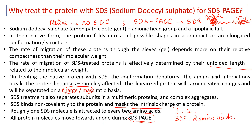Why will the proteins move to the anode? The anode is the positive electrode. After you treat the protein with SDS, the protein becomes negatively charged. So it moves toward the opposite side, which is the positive anode.